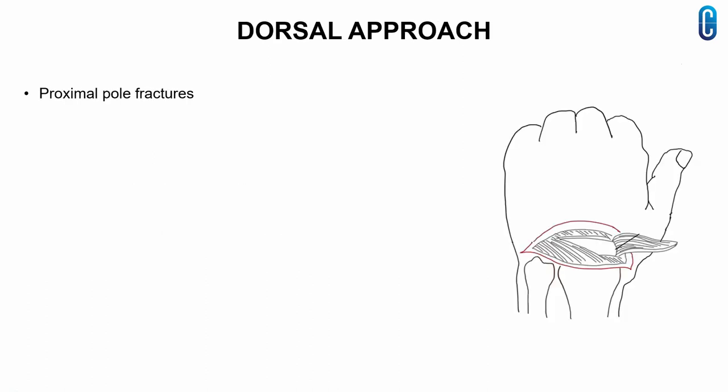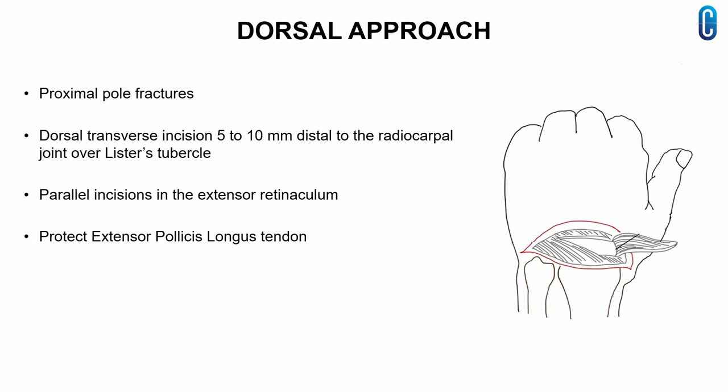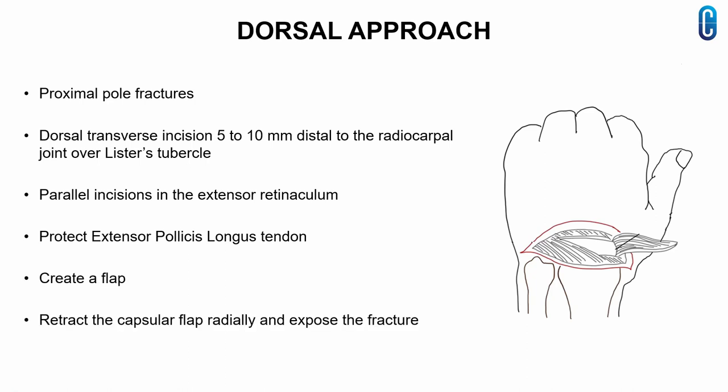The dorsal approach is used for fractures in the proximal pole of the scaphoid. A dorsal transverse incision is made 5-10 mm distal to the radiocarpal joint, extending from the radial styloid to the ulnar styloid. Parallel incisions are made in the extensor retinaculum on each side of the extensor digitorum communis tendons, protecting the extensor tendons, especially the extensor pollicis longus as it exits the third dorsal retinacular compartment. The parallel incisions are connected proximally to create a flap allowing access to the dorsal wrist capsule, and the capsular flap is retracted radially to expose the fracture.